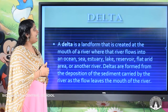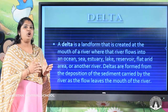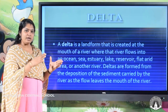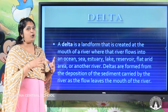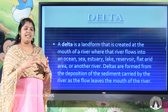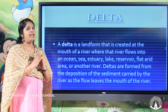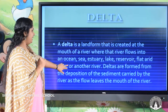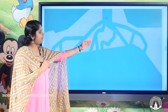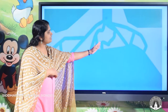The next landform is delta. A delta is a landform created at the end or mouth of the river. At the lower course, the speed of the water slows down and it deposits all the eroded materials at the mouth of the river, creating a landform called a delta. In this picture, you can see the end of the river — after this point, the river ends, and this landform is called a delta.